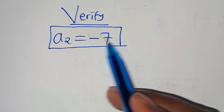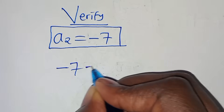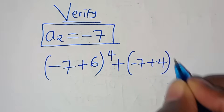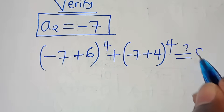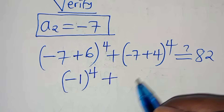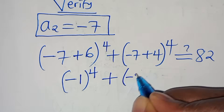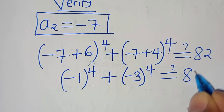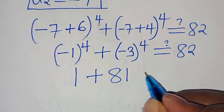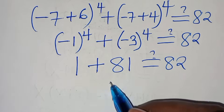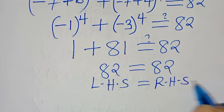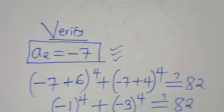Now verifying a₂ = −7: (−7 + 6)⁴ + (−7 + 4)⁴ = (−1)⁴ + (−3)⁴ = 1 + 81 = 82. The left-hand side equals the right-hand side, confirming that a₂ = −7 also satisfies the equation. Please like this video and subscribe. See you in the next video.